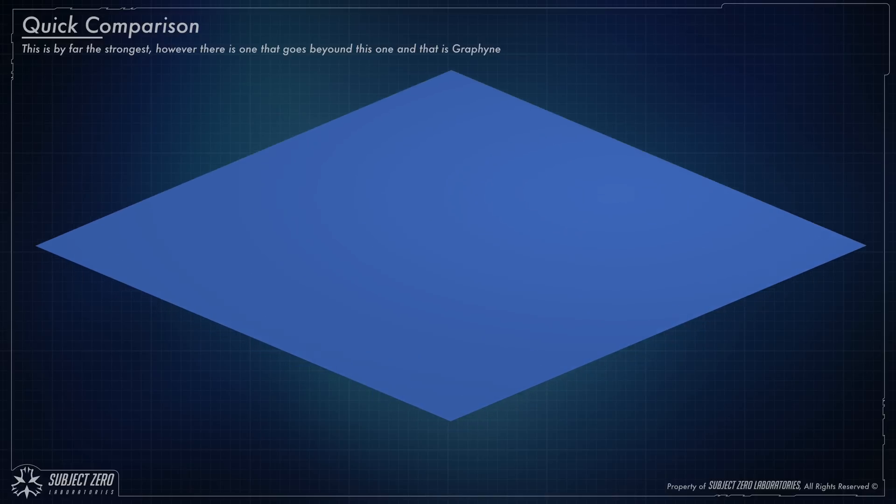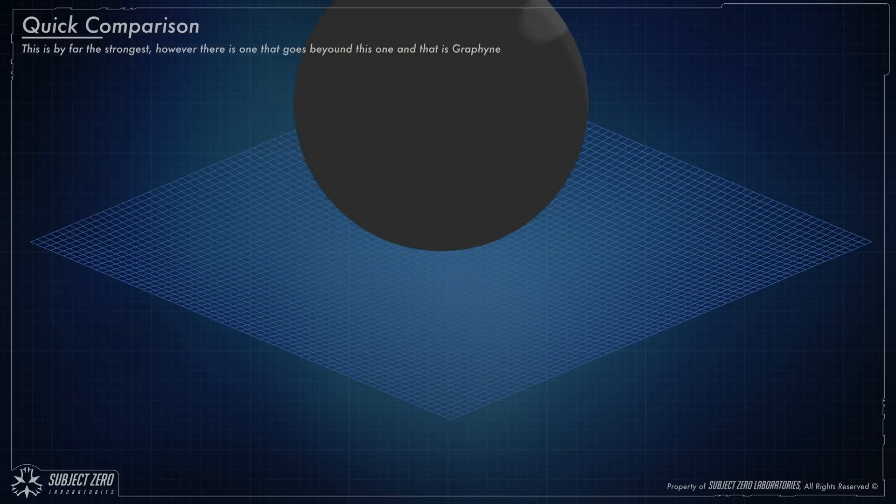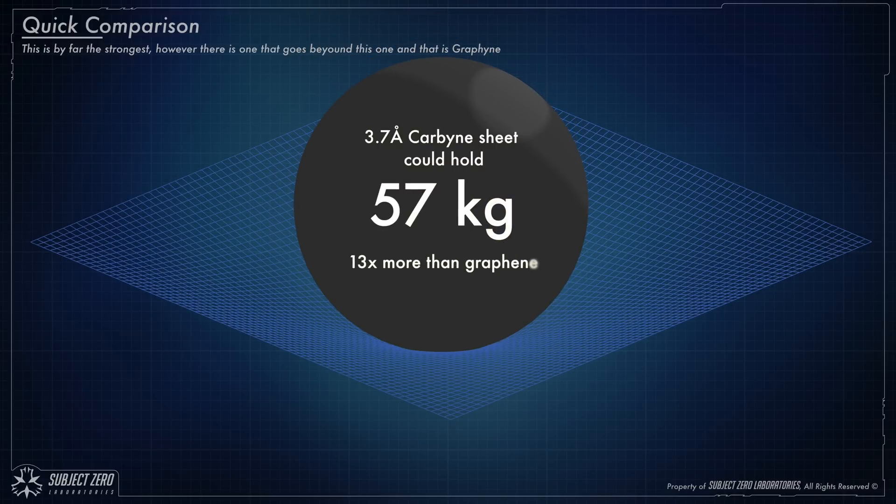But, just doing some crazy math here, carbine is 13 times stronger than graphene. And if we just make a linear calculation, that means that a sheet of carbine, the same thickness of graphene, would be able to hold 57 kilograms. Talk about insane!